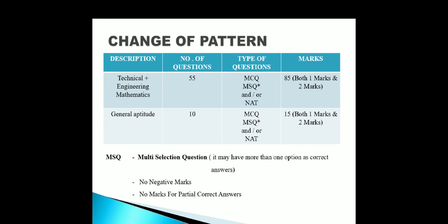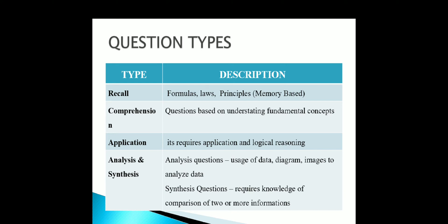MSQ stands for Multiple Selection Question, where more than one option can be the correct answer. If you choose two correct options, you get full marks. However, if you choose an incorrect option along with correct ones, you will receive negative marks. If you choose exactly the correct options, you may receive partial marks.